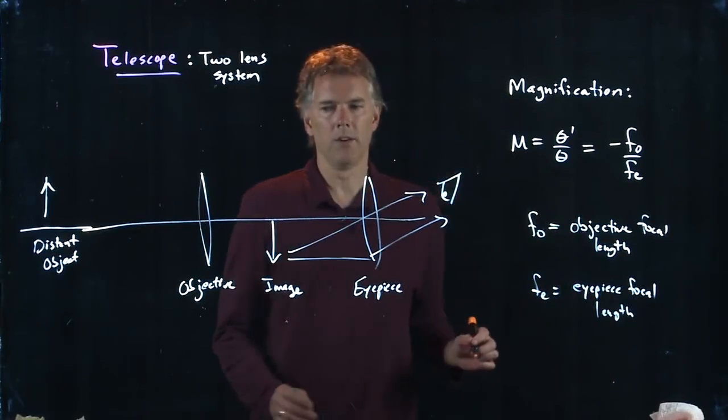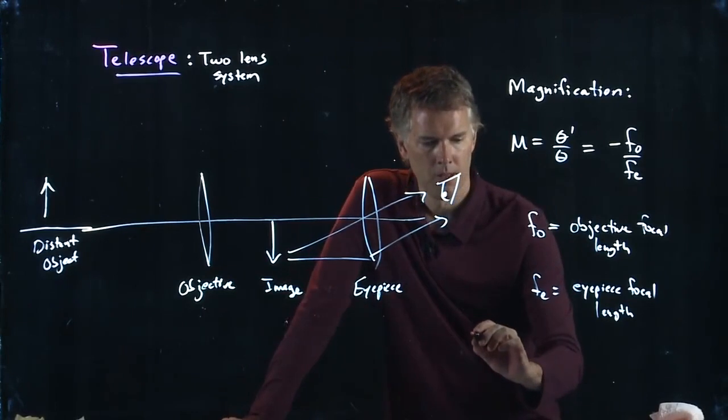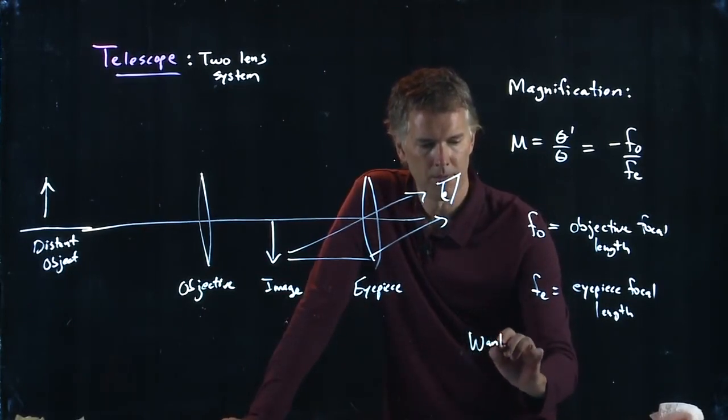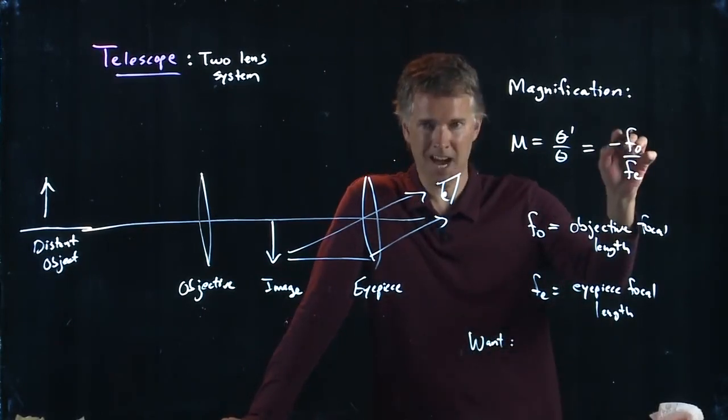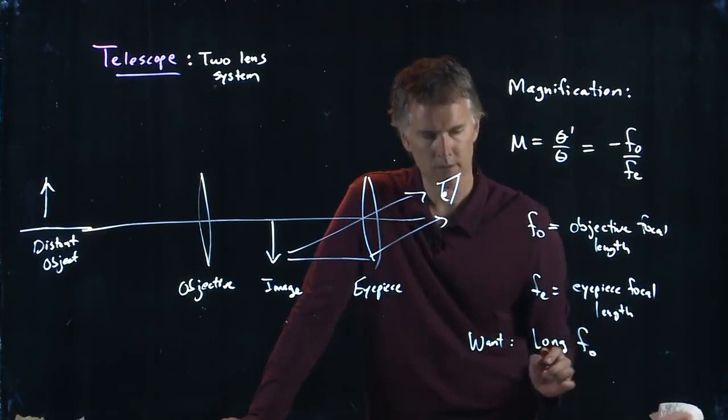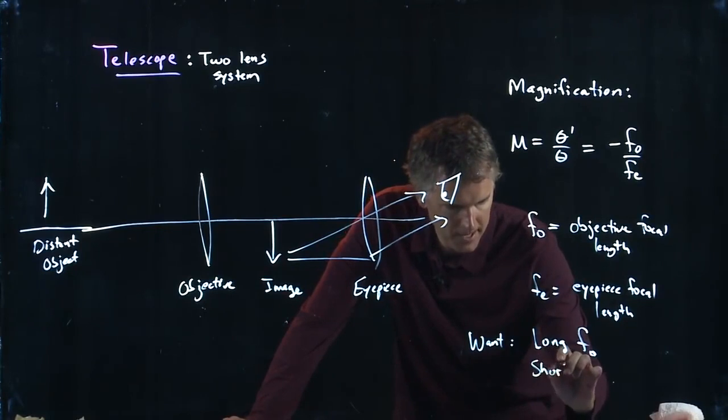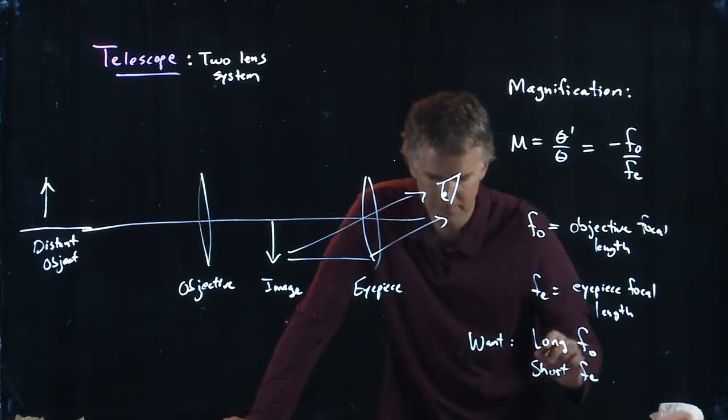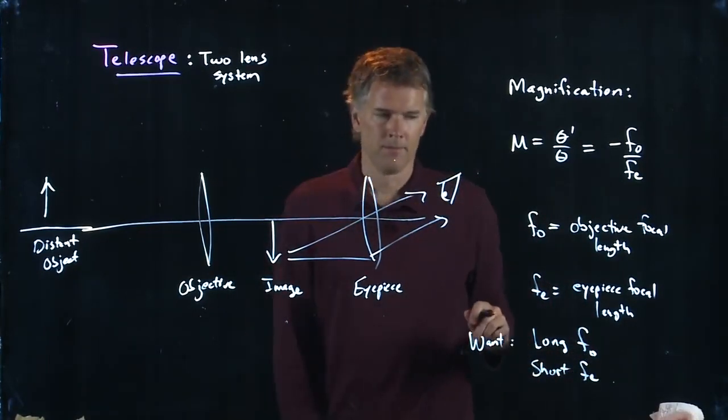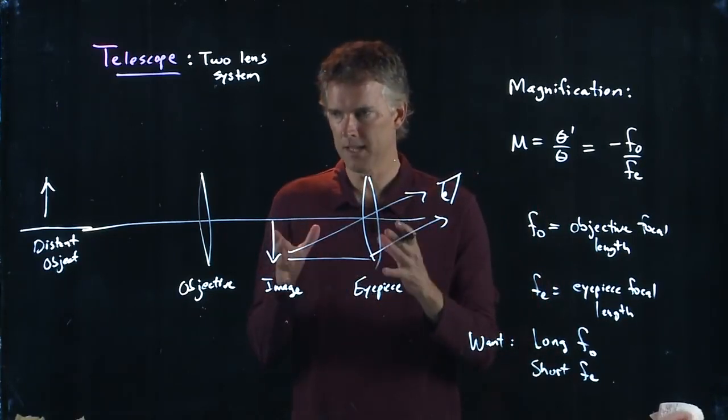So in your telescope, if you want a large magnification, then you want the number up top to be big. You want a long focal length objective. And you want the number in the bottom to be short. And if you think about a telescope, and you've all seen telescopes,